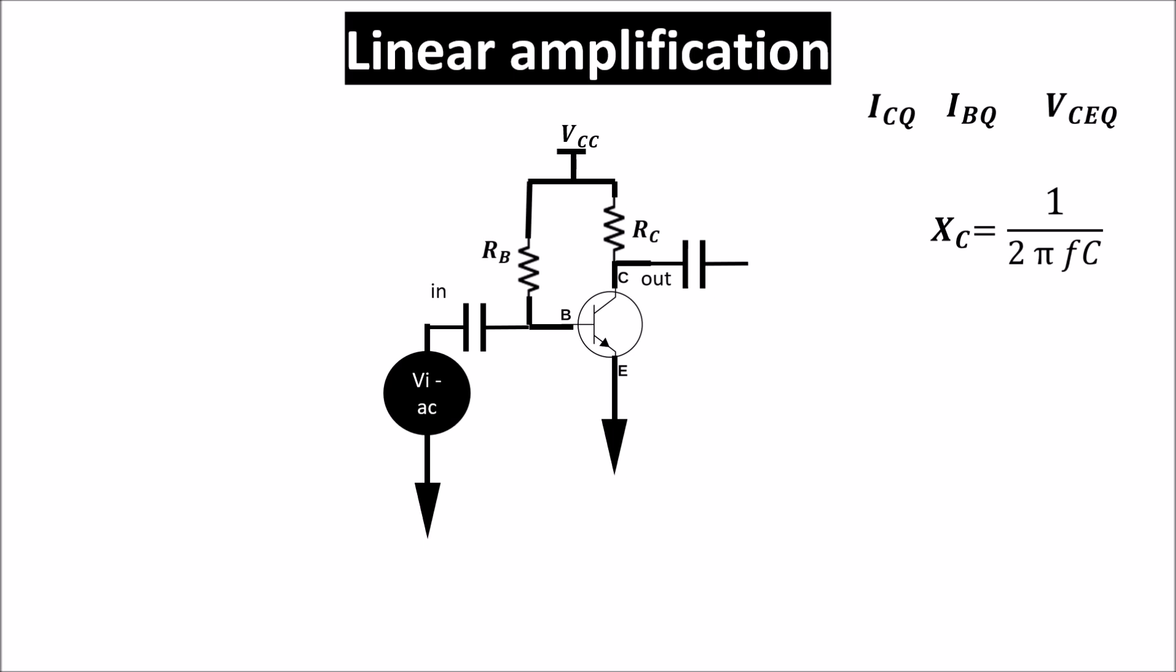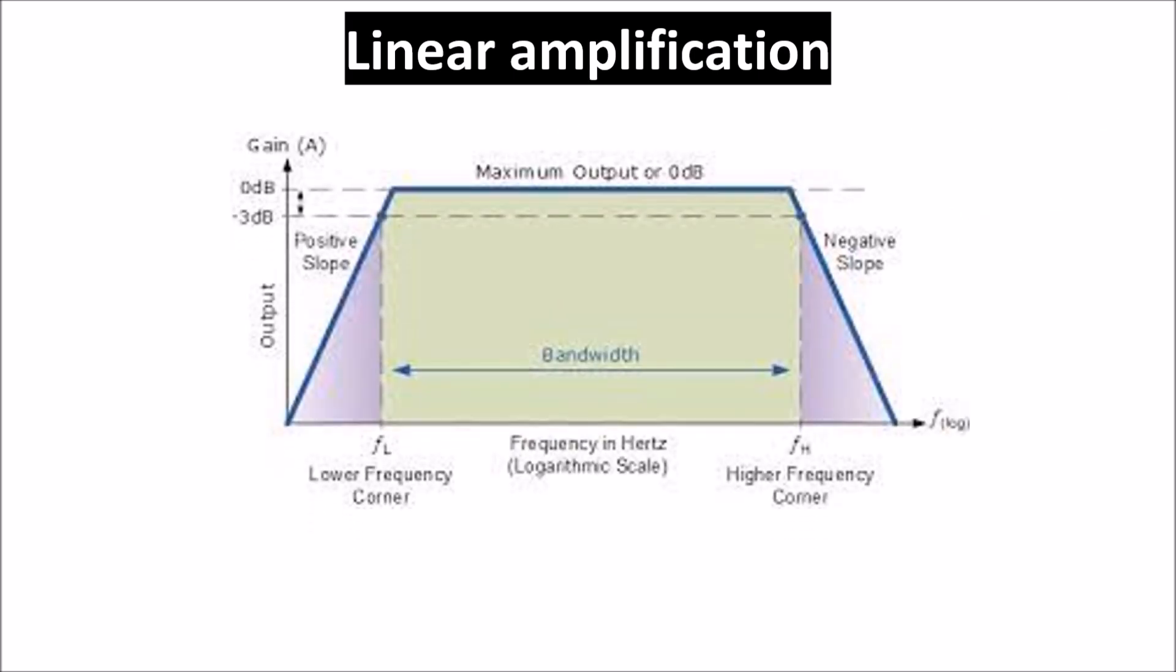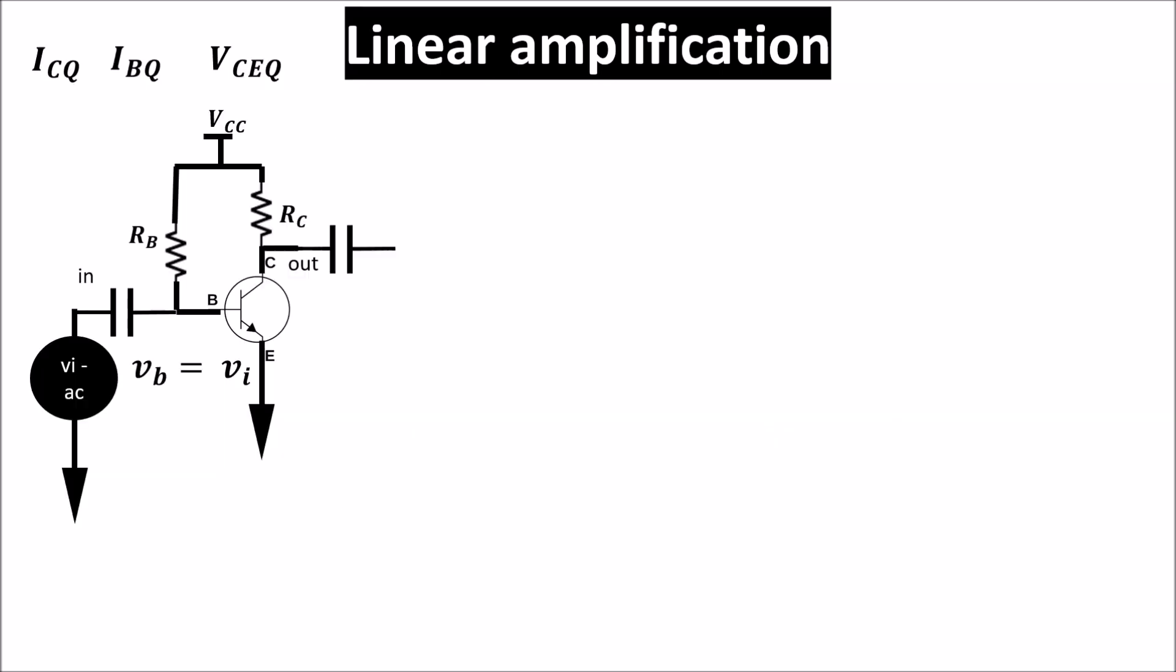For this analysis we assume that our AC input signal is at low frequency in the bandwidth in which our gain is stable. So now we can apply our AC input signal VI and we want to find our output signal. When we apply VI, we give an additional voltage to the base of the BJT.